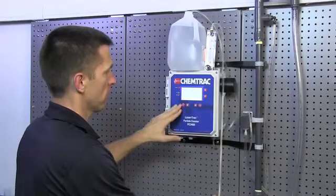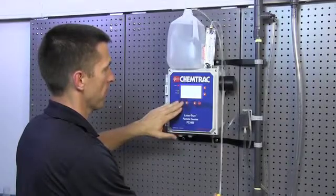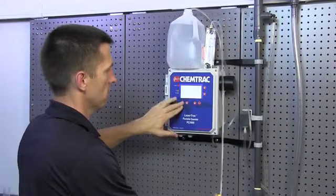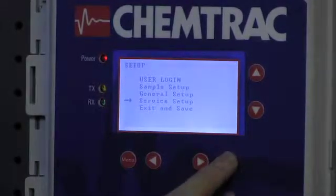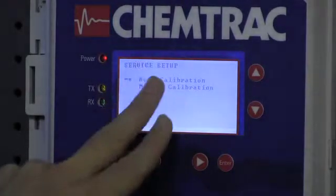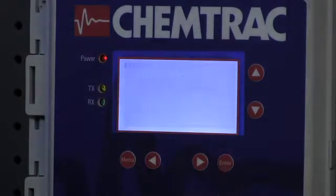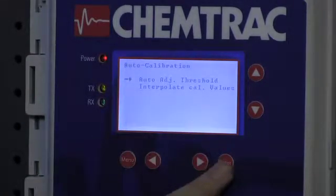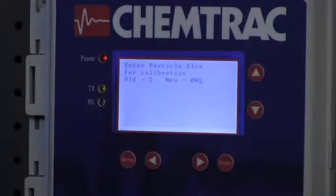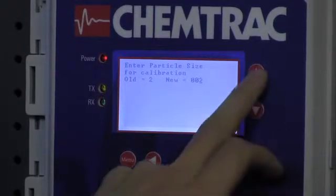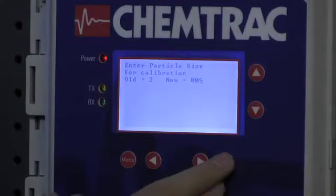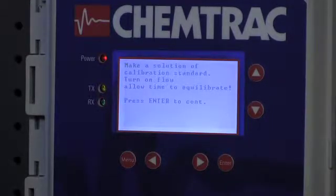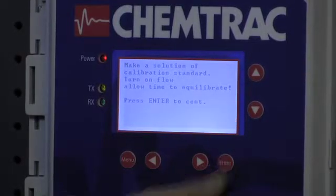So now we're going to go into the menu to calibrate the 5 micron spheres. We're going to hit menu, scroll down to service setup, and enter. Auto calibration, hit enter. Auto adjust thresholds, hit enter. And now we're going to tell it, using the up arrow, change that to 5, so we're telling the analyzer we're calibrating 5 micron. Hit enter. Make sure your flow rate is set for 75 milliliters per minute, and then hit enter to continue.